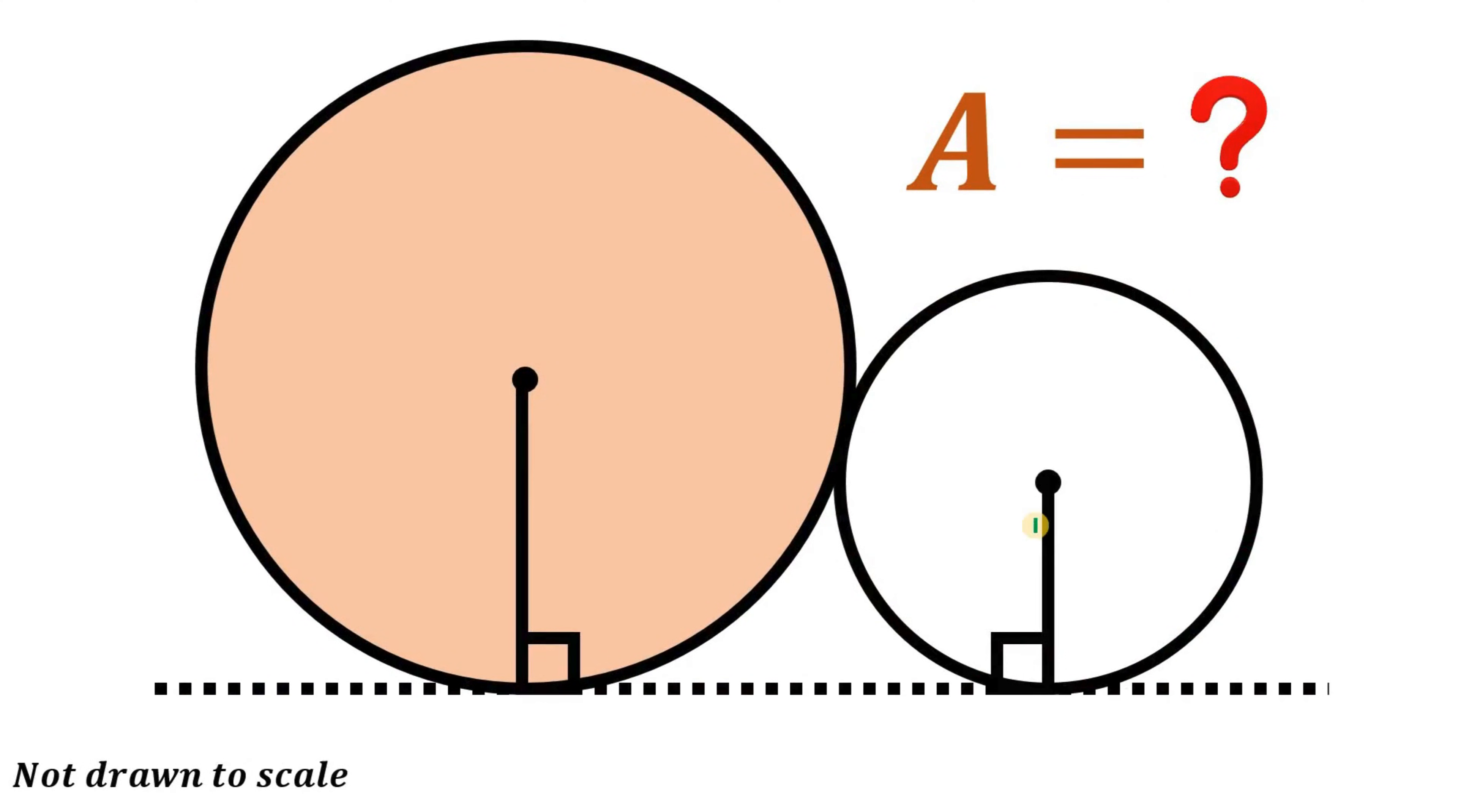Given these two circles with unknown radius. Take note that this figure is not drawn to scale. What we know in this figure is the distance between these two points of tangency, and this is equivalent to 12 units. Also, we know the distance of the centers of these two circles. This is 13 units.